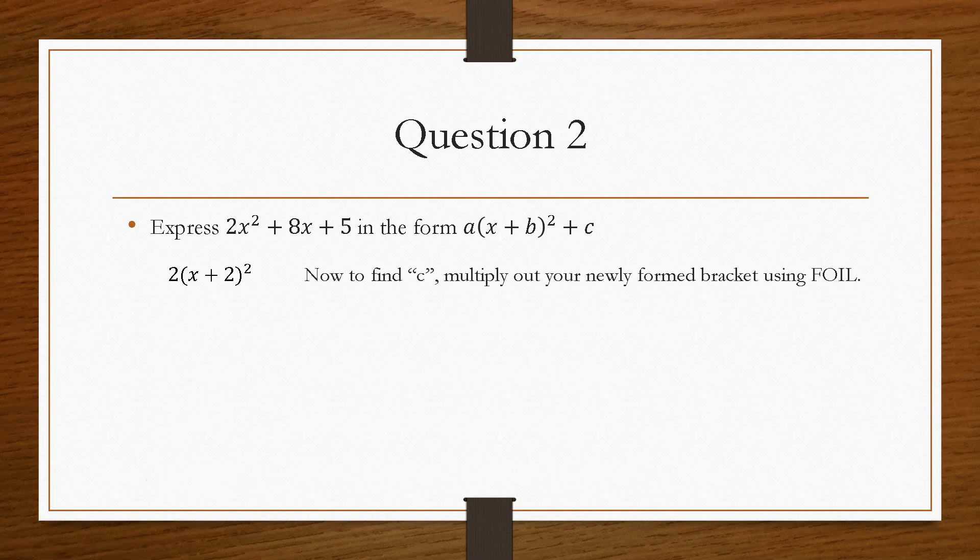So the process to find c is we multiply out the bracket again that we made using FOIL, and we haven't considered 2 yet. So once we neaten this up and we get x squared plus 4x plus 4, we then have to multiply this bracket by 2 and scale it up.